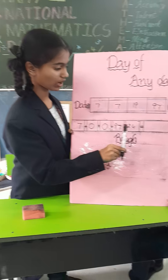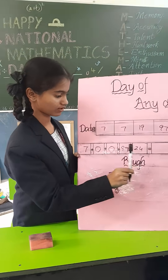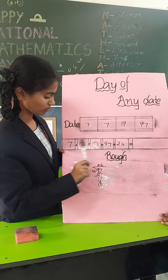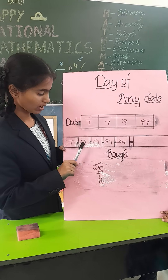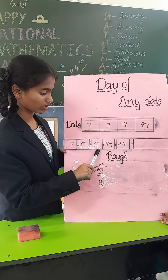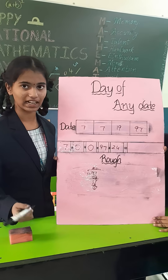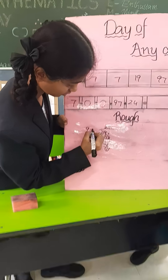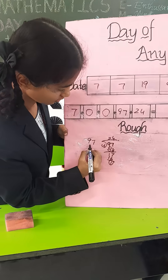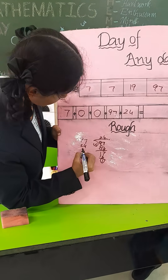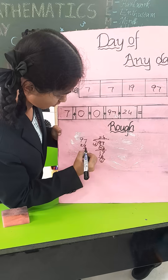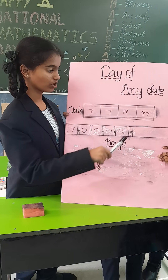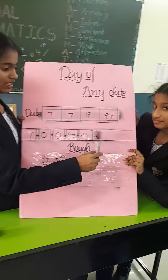We have to add the numbers: 97 plus 24 plus 7. Because 0 has no value, so we are not adding the zero codes. That gives us 128, and we write it here.